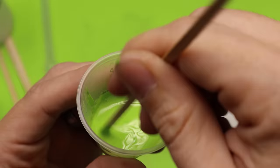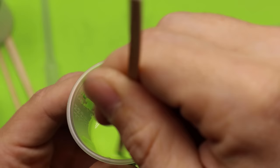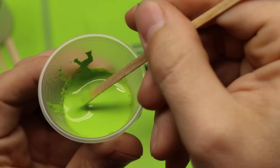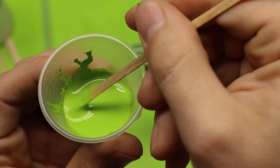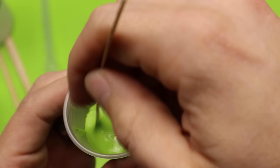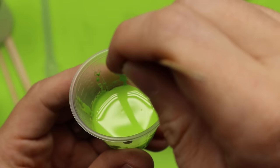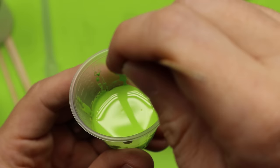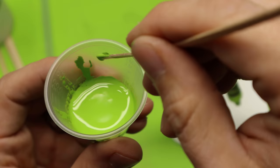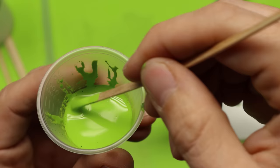And this is where you want to add just little increments at a time because you do not want to get this too thin. You just want to get it thin enough. So I'm going to stir that up again real good. And now I'm going to try it. Get some on my end and you can see how it's starting to drip down really well. Like this is getting very close.